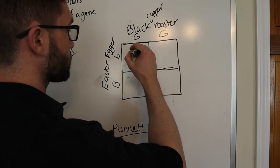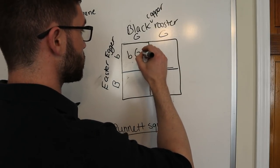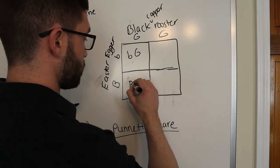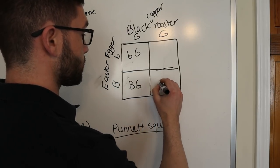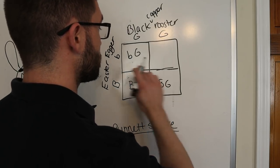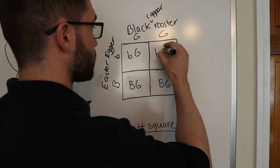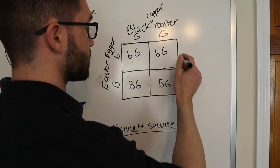And we'll do two G's again for the dark egg genes. And we'll start to cross. So, this inherits one lowercase b, one G. One uppercase B, one G. Another uppercase B and G. And another lowercase b and uppercase G.